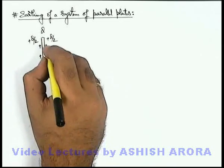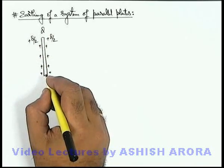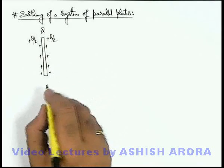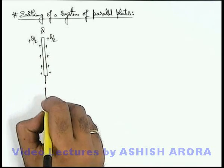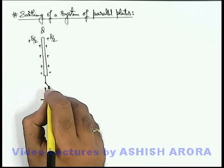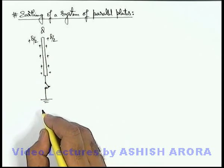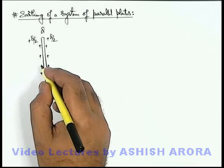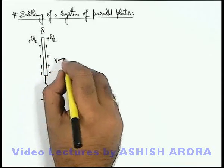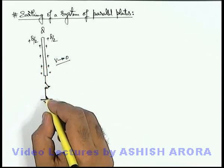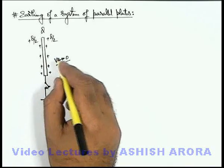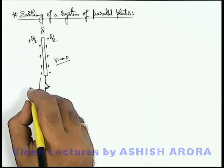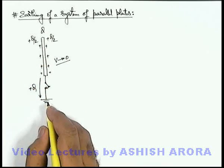If we talk about the potential of this plate, obviously due to the positive charge it'll be some positive potential. Now say if the plate is connected to earth via switch and the switch is closed, then obviously there'll be an exchange of charge between the earth and the plate such that the final potential of this plate should be equal to zero. For the final potential to be zero its final charge has to be zero, meaning the whole charge plus q will flow down to earth.